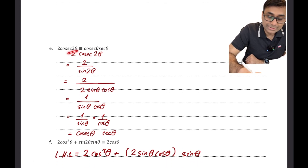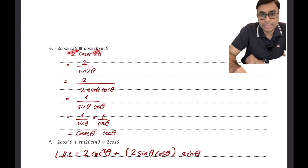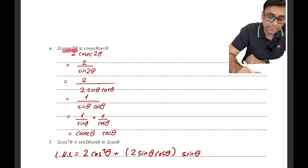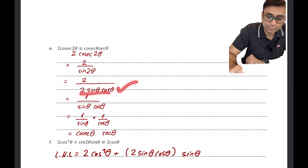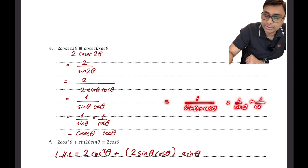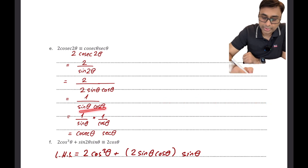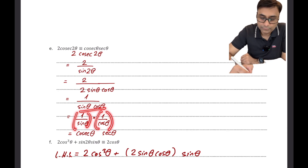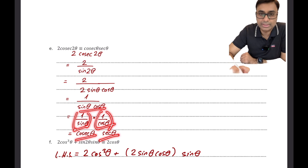Looking at another example, I can see there's a 2:1 ratio with the angles, so I'll be using a double angle formula. I replaced cosec 2θ by 1/sin 2θ, and sin 2θ became 2 sin θ cos θ — that's the double angle formula. The 2 cancels out, leaving 1/(sin θ · cos θ). If they are as a product I can write it as (1/sin θ) · (1/cos θ), giving cosec θ · sec θ.